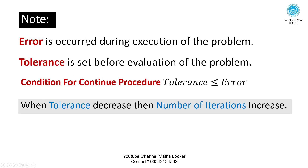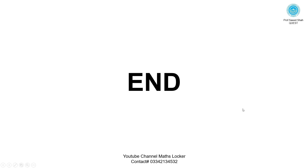Error occurs during execution of the problem. Tolerance is set before evaluation of the problem. Condition for continuing the procedure: tolerance ≤ error. When tolerance decreases, the number of iterations increases. End of the lecture.